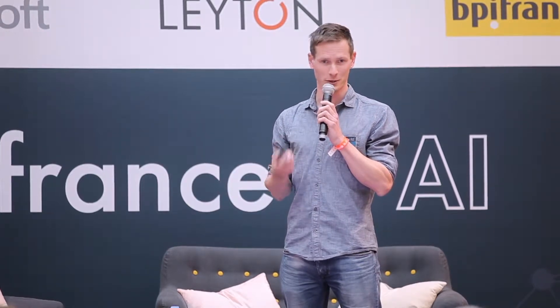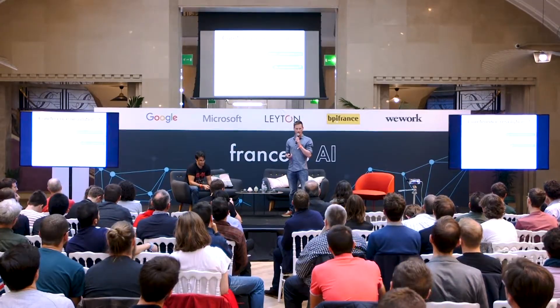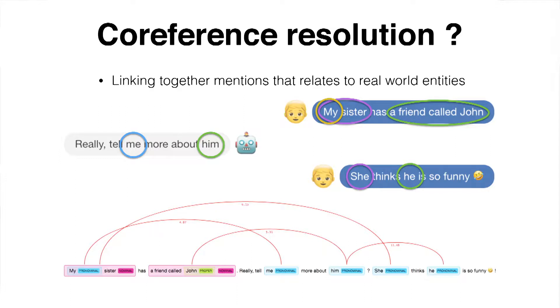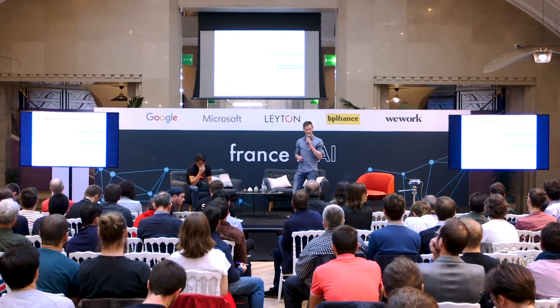It looks easy for us humans — we're really good at doing that. Chatbots are really bad at it; they forget every sentence. The previous example was quite easy, but here you can see there are at least five real-world entities. The user is talking about their sister: 'My sister has a friend called John.' The bot says: 'Really? Tell me more about him.' The user says: 'She thinks he's so funny.' There's 'my' referring to the user, 'my sister' as the user's sister, and so on. You have to know which entity is which. That's called co-reference resolution.